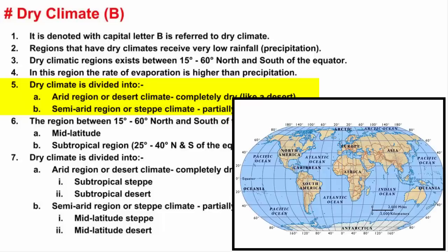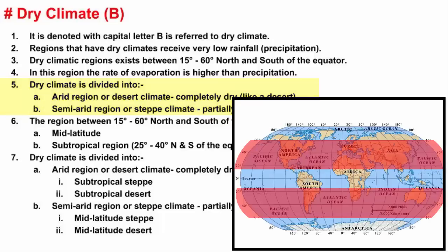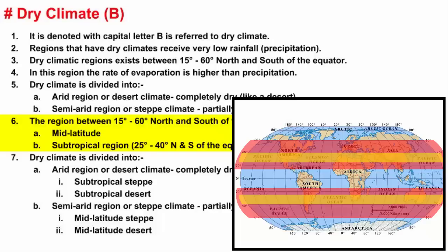As mentioned, dry climate exists in areas between 15 to 60 degrees north and south of the equator. This region is also called mid-latitude. We also have the subtropical region, which is between 25 to 40 degrees north and south of the equator. Based on this, dry climate is divided into steppe climate and desert climate, further subdivided into subtropical steppe, subtropical desert, mid-latitude steppe, and mid-latitude desert.